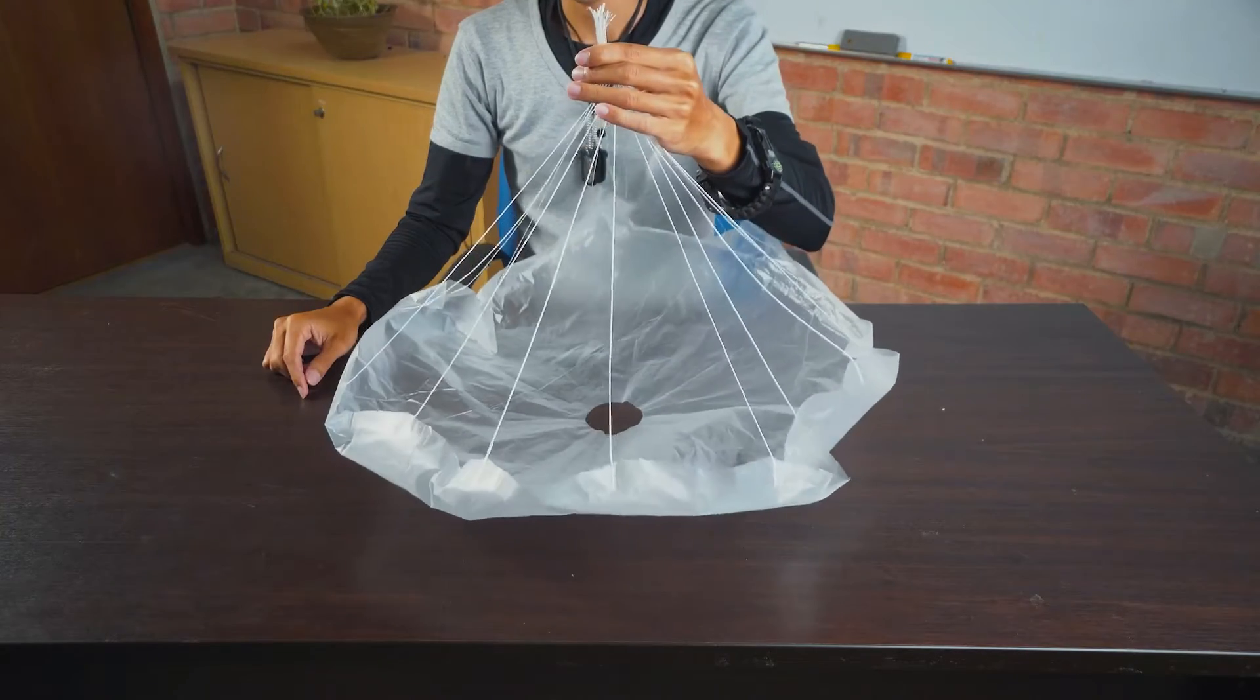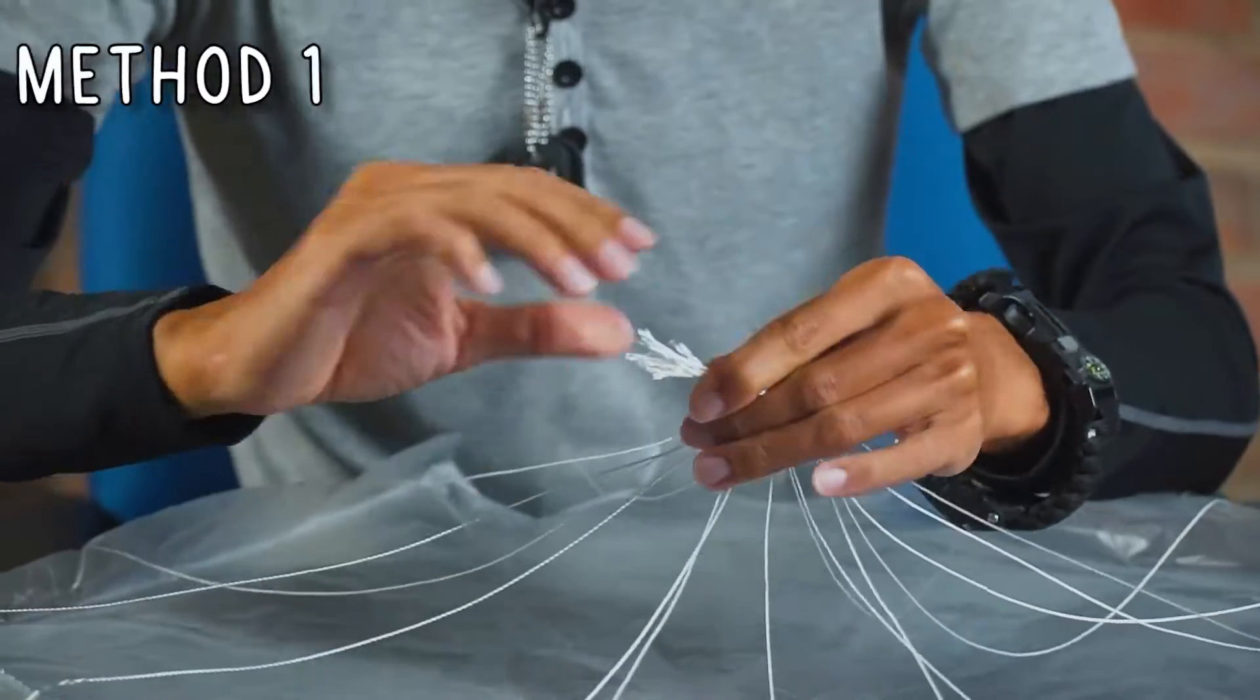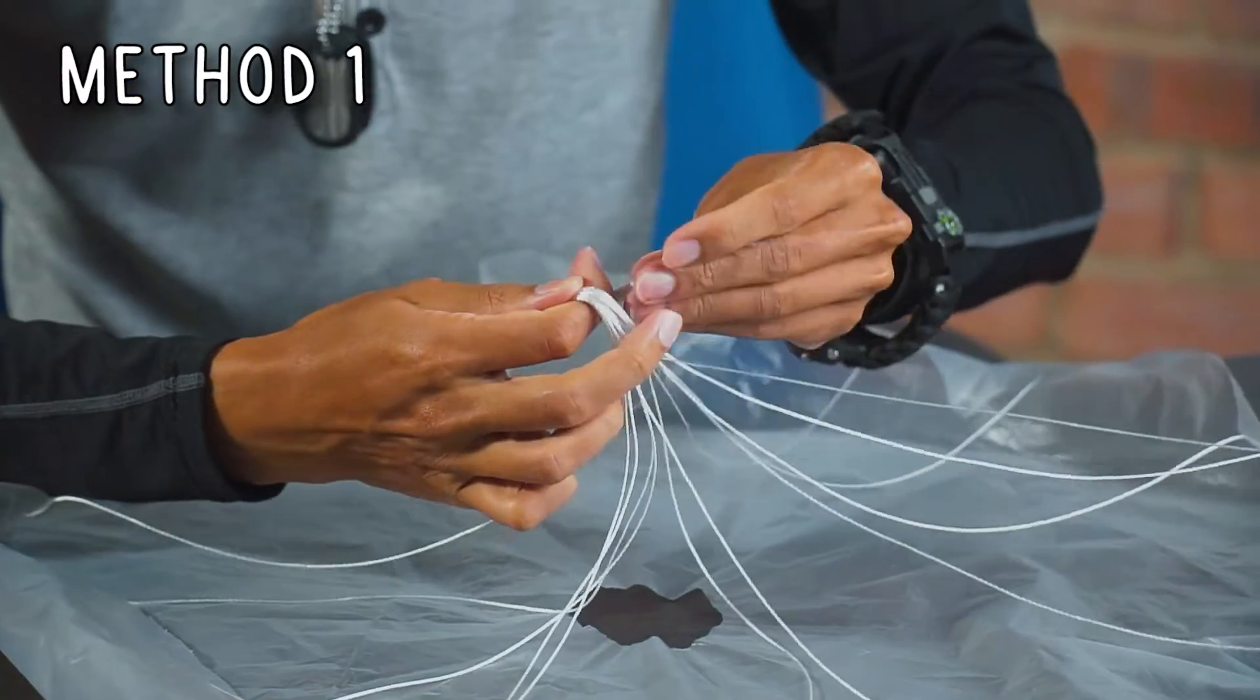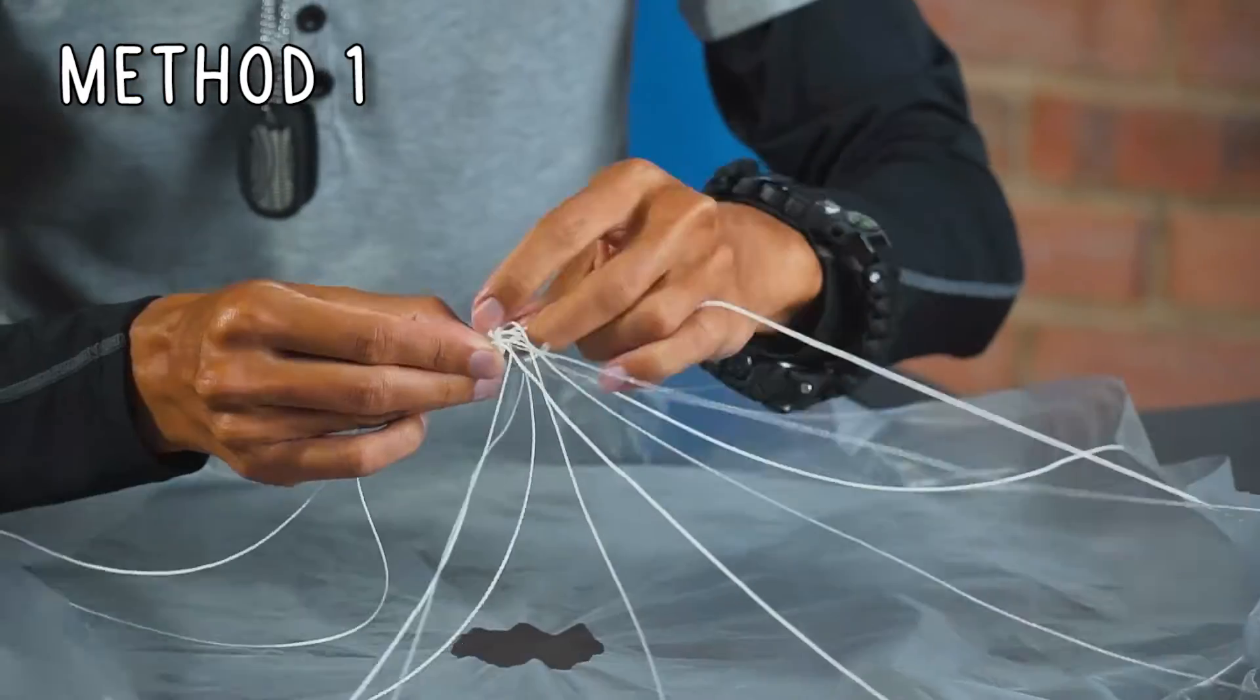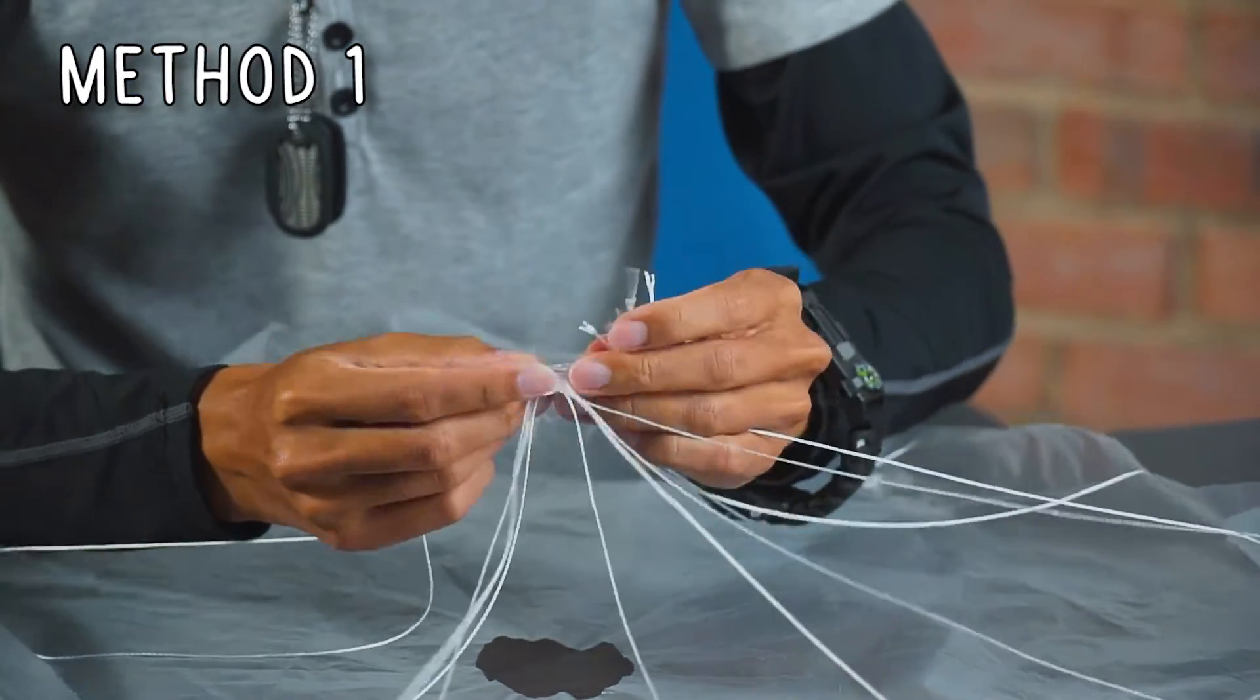There are two ways to attach the parachute to the bottom. For the first method, you can gather all the ends of the string and tie a knot as close to the ends as possible.